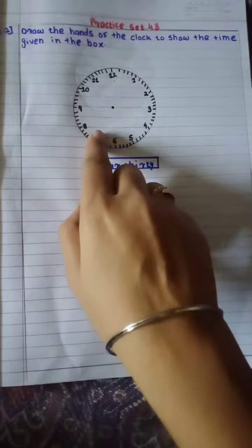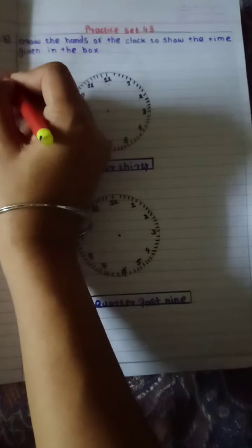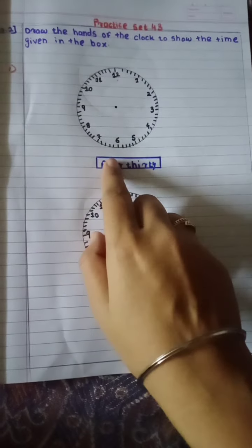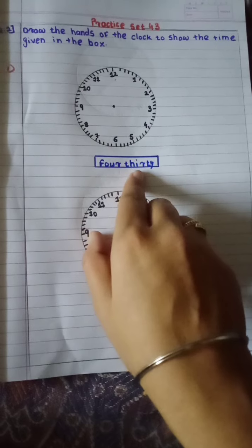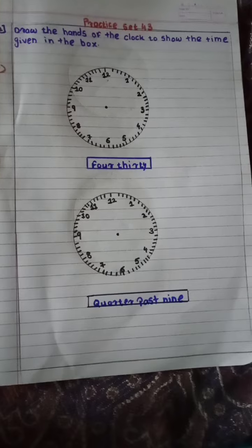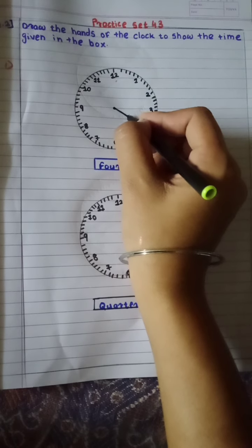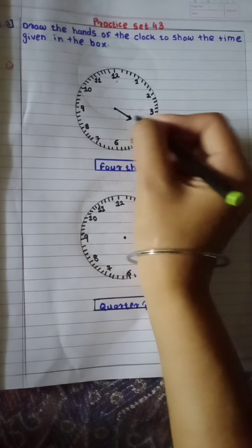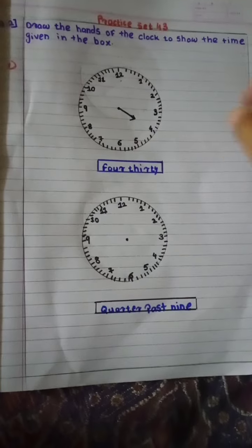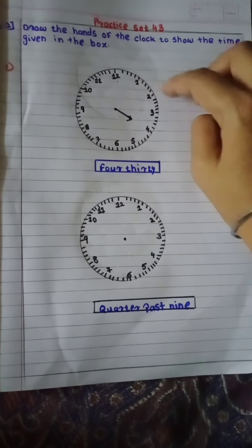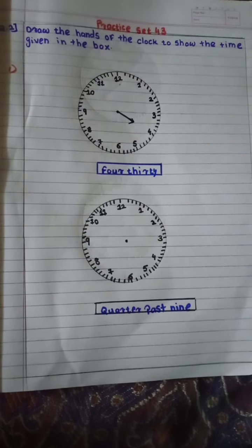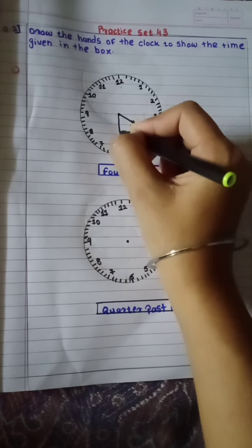In the first sum, we have to show the hands of the clock for 4:30, meaning 4 hours 30 minutes. I will show the hour hand on 4. And for 30 minutes, counting from 12: 5, 10, 15, 20, 25, and 30 — that brings us to 6. So I will show the minute hand on 6.